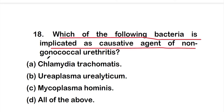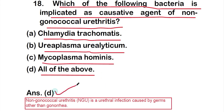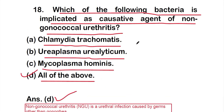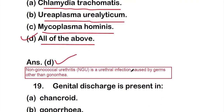Question 18: Which of the following bacteria is implicated as a causative agent of non-gonococcal urethritis? Options: option A: Chlamydia trachomatis; option B: Ureaplasma urealyticum; option C: Mycoplasma hominis; option D: all of the above. The right answer is option D. Non-gonococcal urethritis is a urethral infection caused by organisms other than gonorrhea.